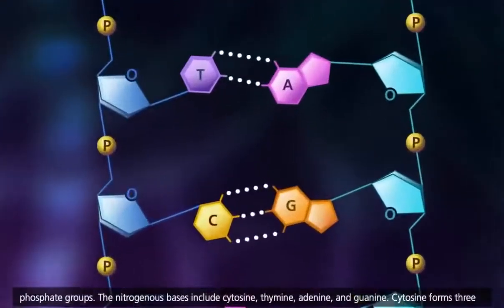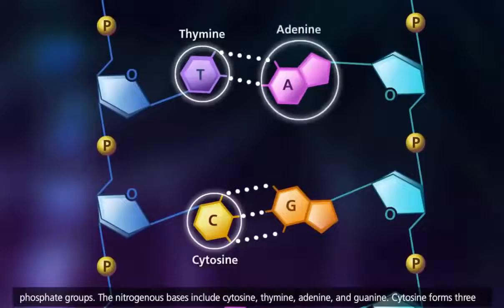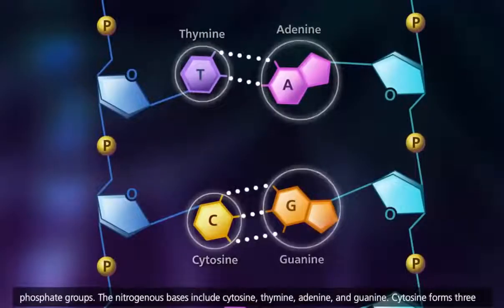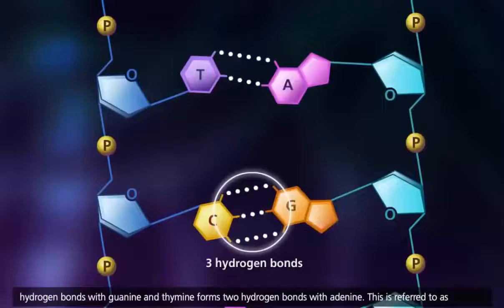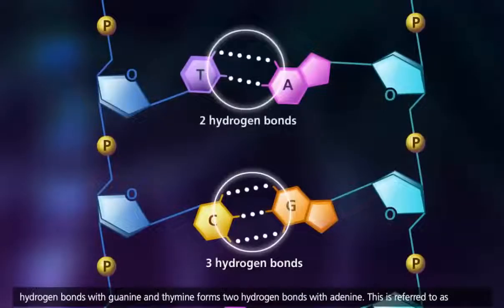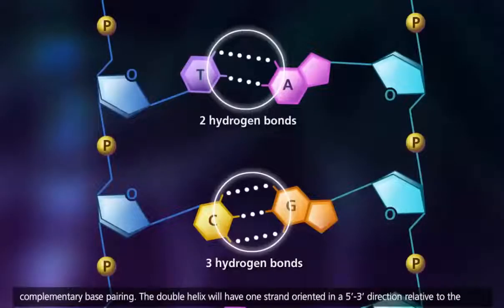The nitrogenous bases include cytosine, thymine, adenine, and guanine. Cytosine forms three hydrogen bonds with guanine, and thymine forms two hydrogen bonds with adenine. This is referred to as complementary base pairing.